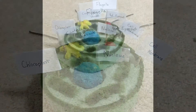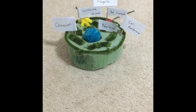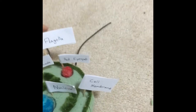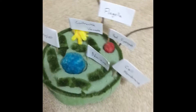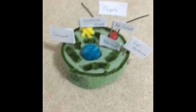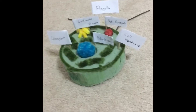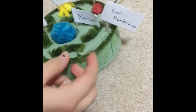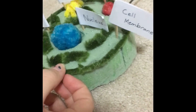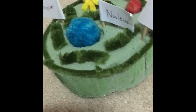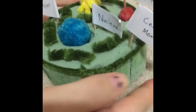Each volvox has two flagella, which rotate in a propeller-like motion to help it move. In a colony, the combined amount of flagella looks like cilia. The cell membrane protects the microbe from outside things and also holds the form and all the parts of a volvox.